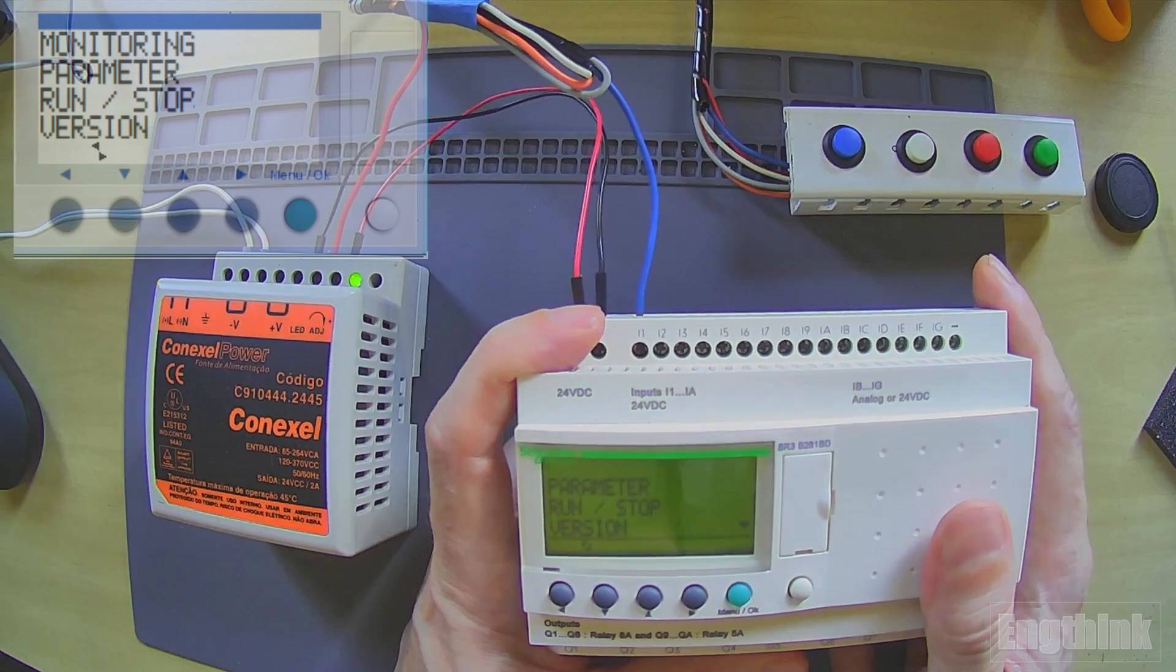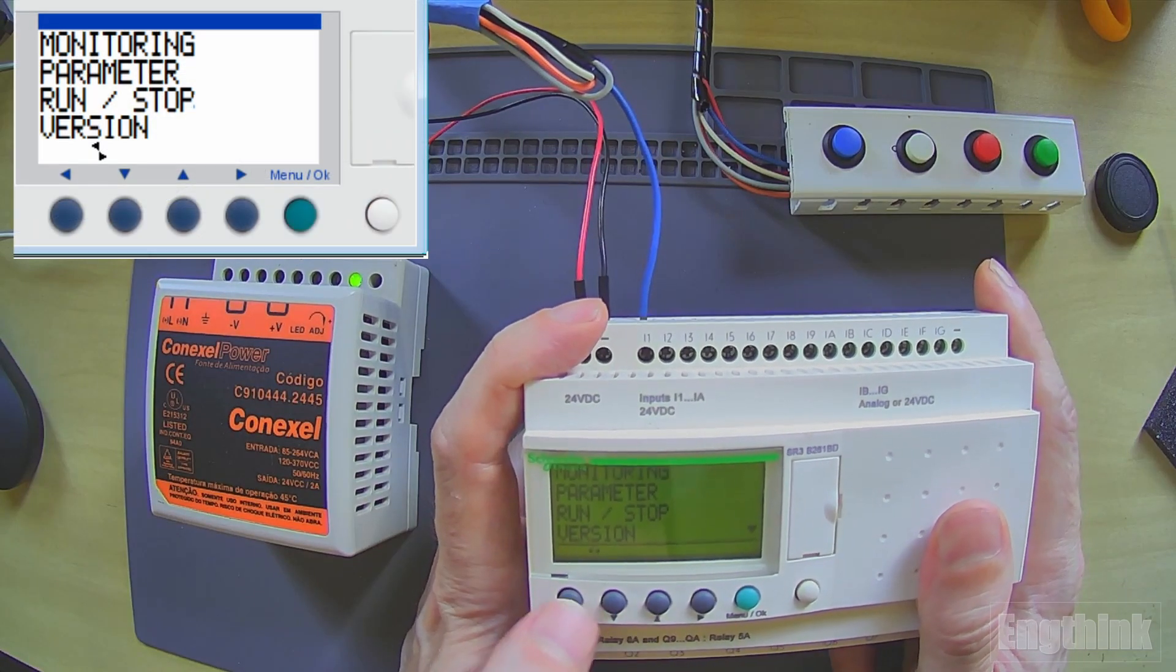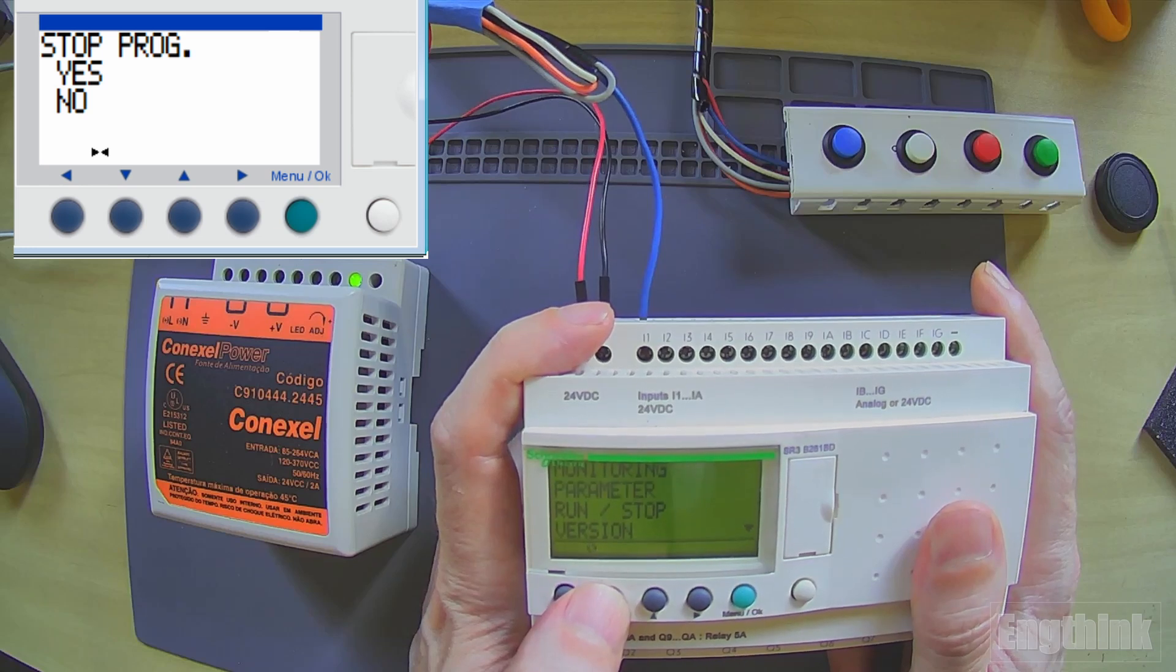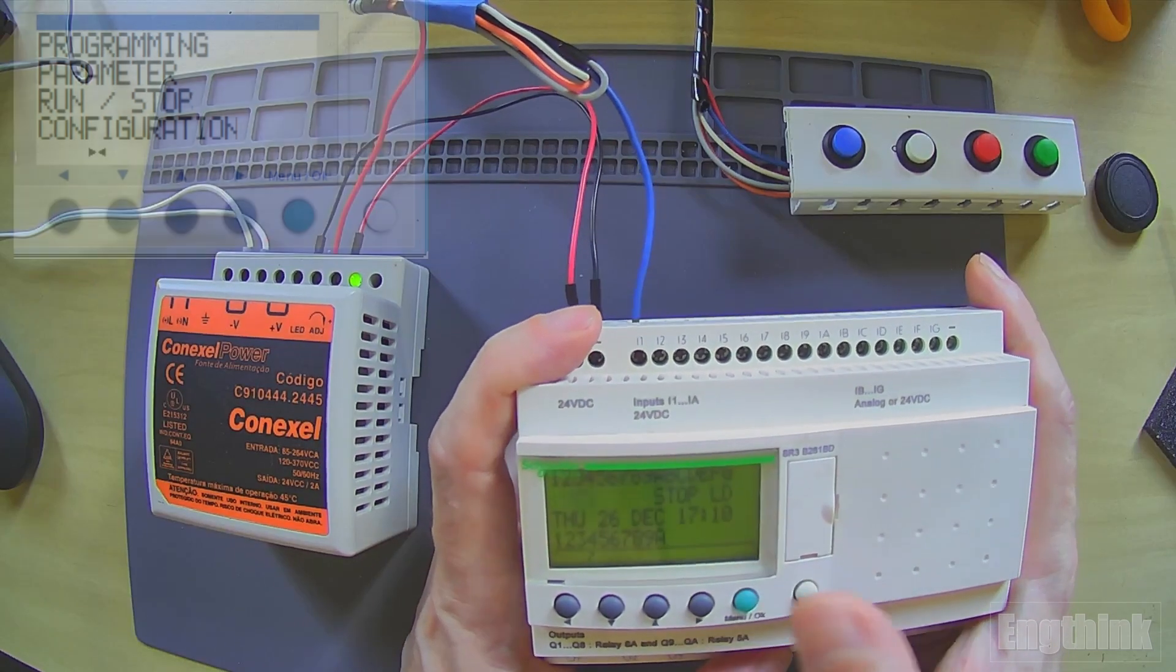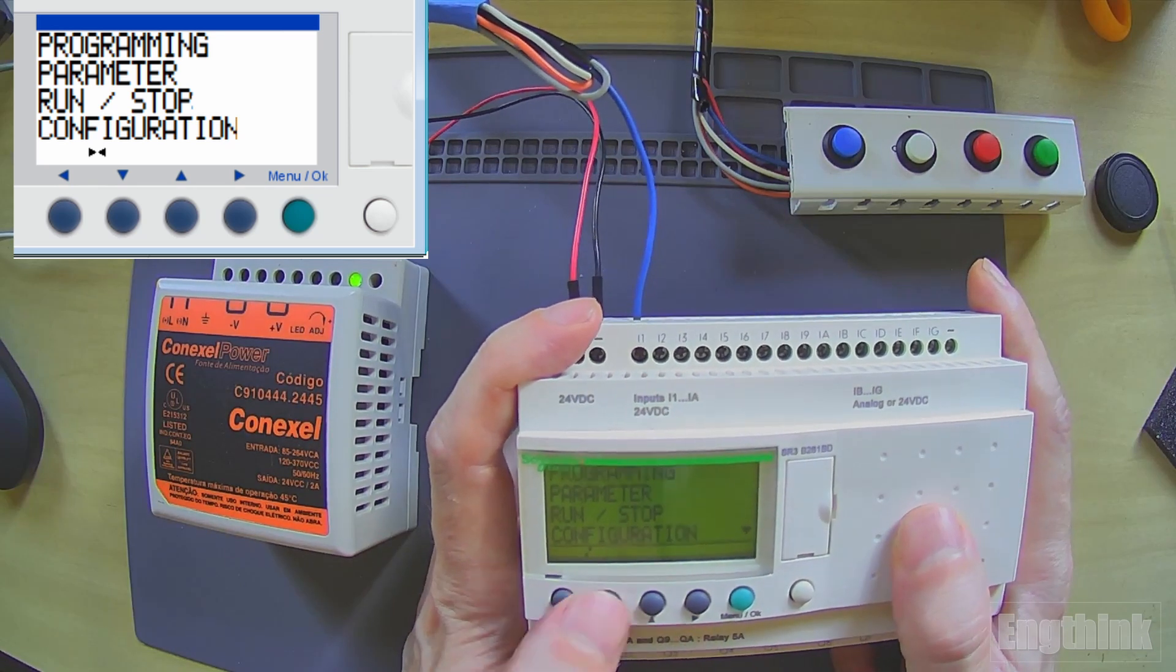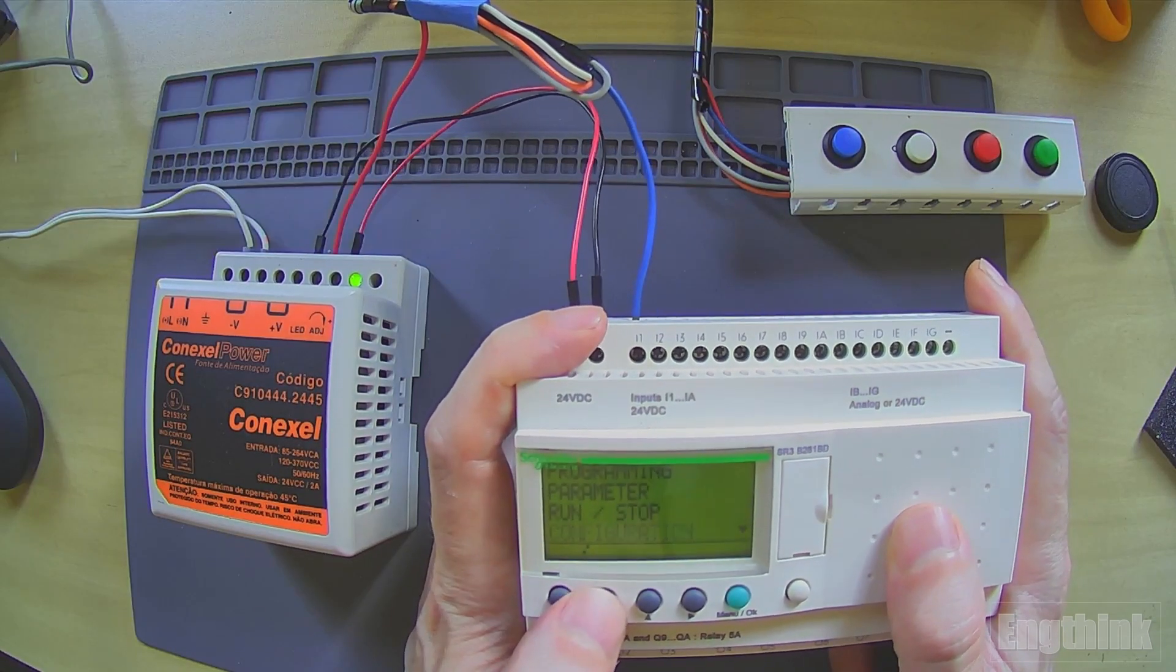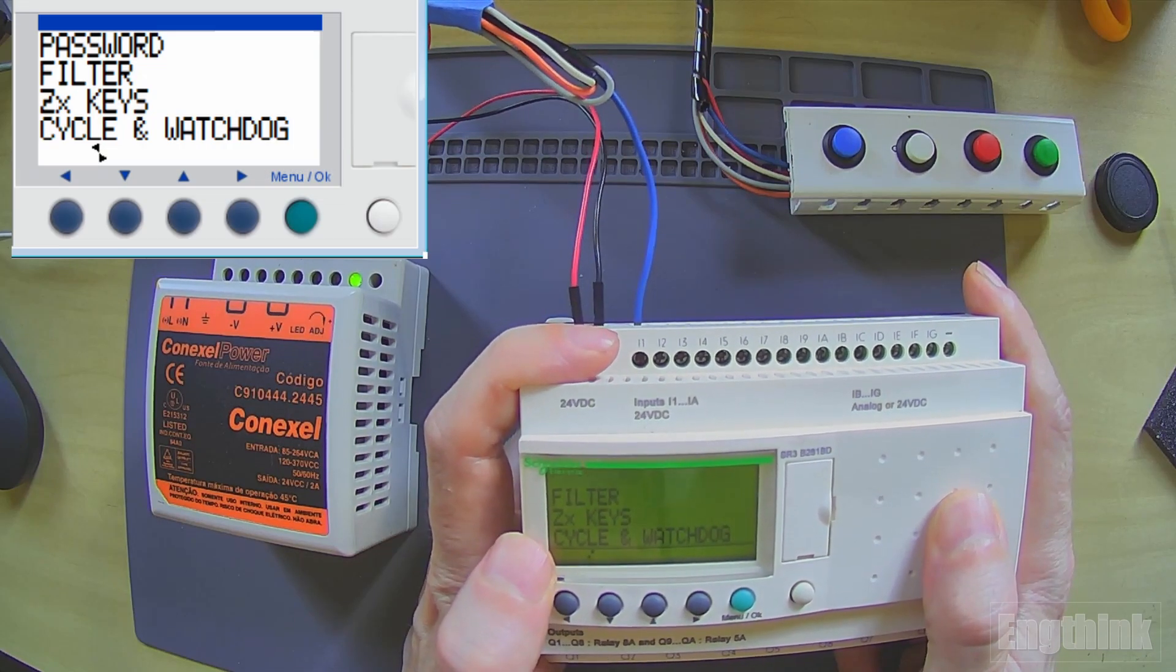Let's go to run and stop function, because every time we want to change some configuration, we need to stop the program. Let's stop the program and then go again to the menu and go to configuration.